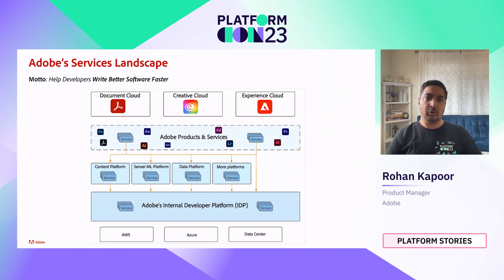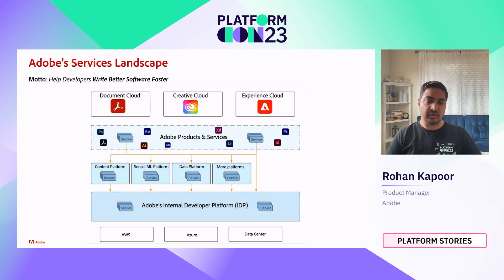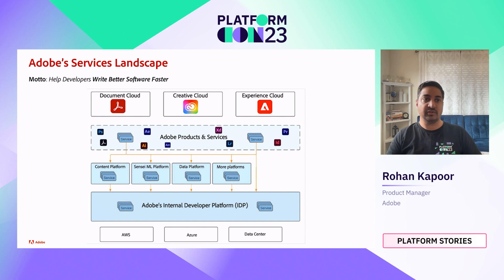Our IDP's motto is to help developers write better software faster, and these developers write code on behalf of three primary clouds of Adobe, which are Document, Creative, and Experience Cloud. These consist of various products like Acrobat, Photoshop, and Adobe Experience Platform. These products are using several platforms like data, content, and sensor machine learning. Both product and platform services run on top of the Adobe IDP, which in turn runs on top of AWS, Azure, and our own data centers.